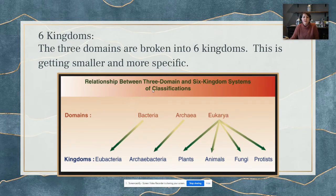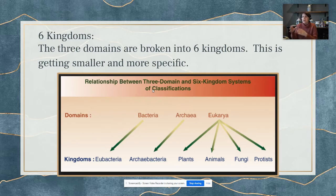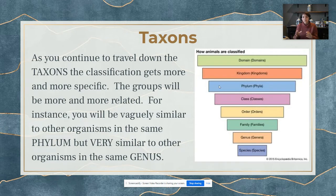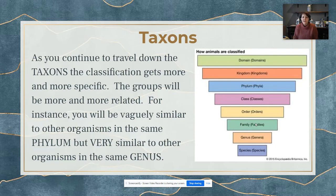From the domains, we break them into six kingdoms. The Eukarya domain is broken into plants, animals, fungi, and protists. The kingdoms are starting to get a little more specific — we've separated plants from animals, from fungi, from protists. From there, we continue getting more specific: kingdom, phylum, class, order, family, genus, and finally one single species. As we go down, our groups get smaller and more specific, and organisms start to look more and more alike. Members in the same genus would be very similar, whereas members in the same phylum would show a wide variety of different organisms.